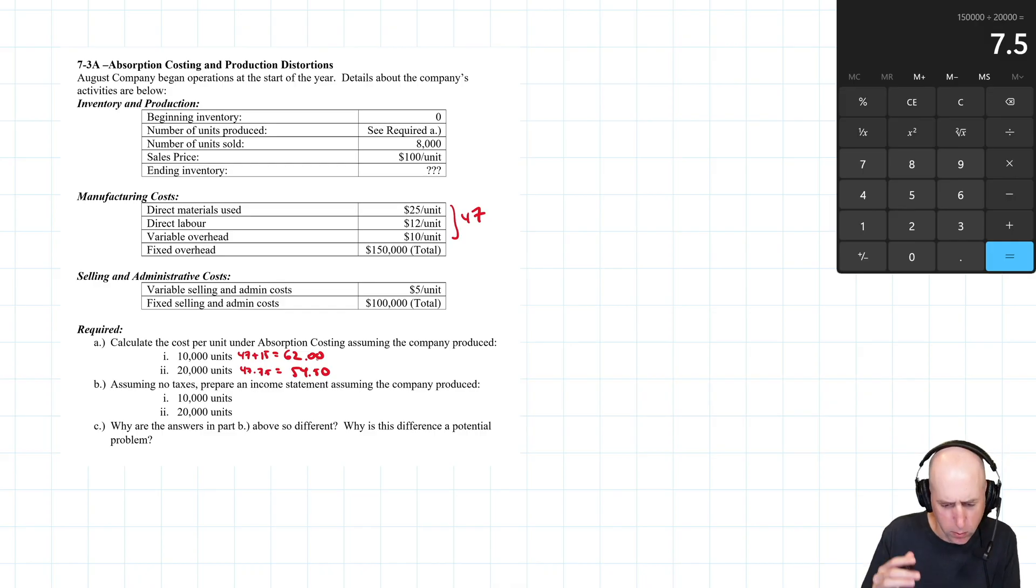So now we're really going to illustrate the point. Assuming no taxes, prepare an income statement under 10,000 units at $62 per unit, and under 20,000 units. And it's important to say it's the exact same company, right? Exact same product, exact same sales, exact same expenses, exact same costs. Under one scenario though, we make a heck of a lot more units than under the other.